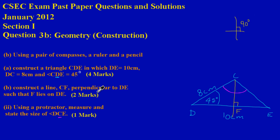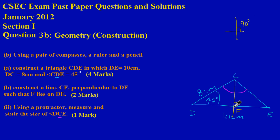In the next part they're asking us to construct a line CF perpendicular to DE such that F lies on DE — that's an easy two marks. Two or more lines are perpendicular if they meet at 90 degrees. So we need to construct a line segment from point C coming down, cutting DE at 90 degrees, and where it meets DE we'll call that point F.